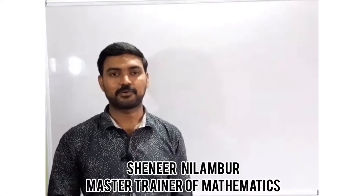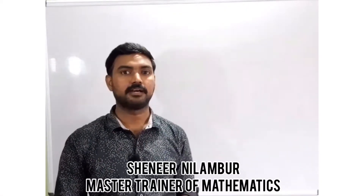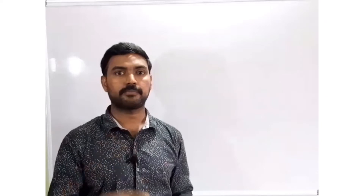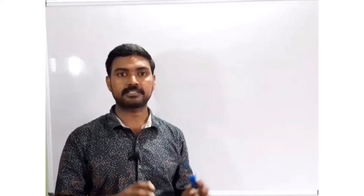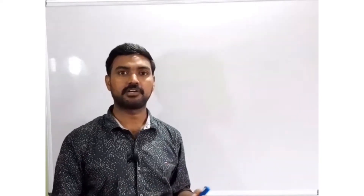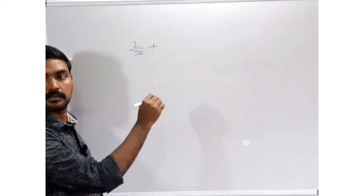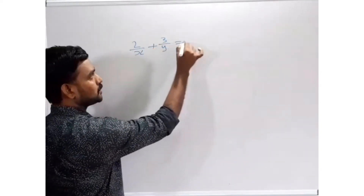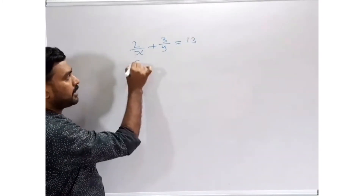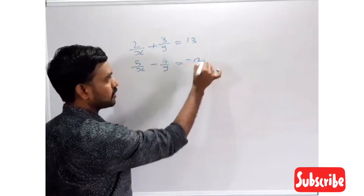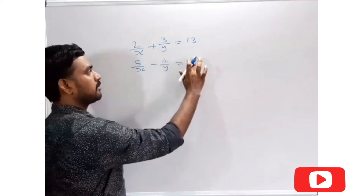Peace and blessings to all of you. We are continuing the lesson on pair of linear equations in two variables. In this part, we are going to explain: if a pair of equations is not linear, how to solve such problems. Some equations can be converted into the form of a pair of linear equations. We are going to select one example: 2/x + 3/y = 13 and 5/x - 4/y = -2.